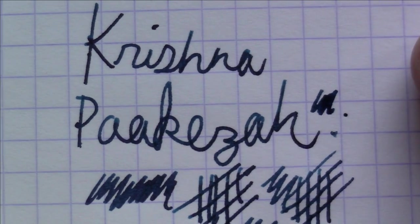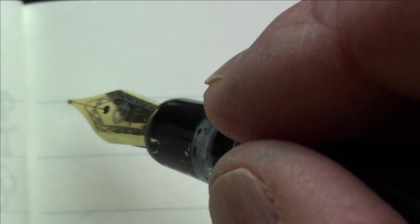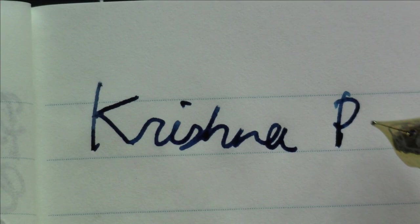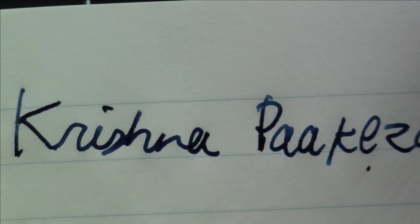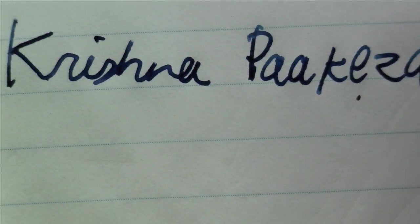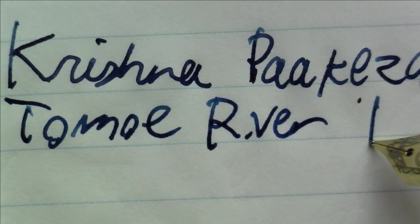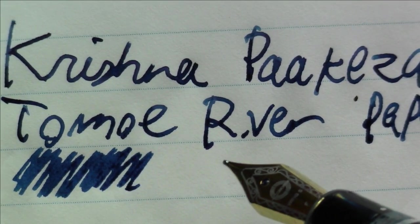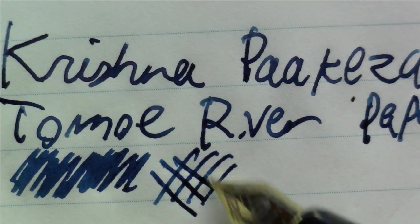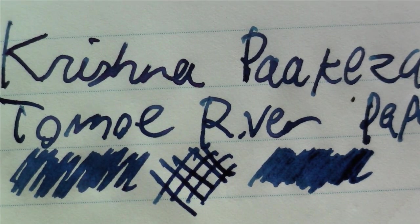That's what it looks like on this Rhodia paper. Let's take a look at what it looks like on Tomoe River paper. Okay. Like I said, we're writing here with Krishna Pakiza. And that's, this is on Tomoe River paper. And definitely you see a bit of shading on the Tomoe River color that you don't see on the Rhodia, which is very nice.